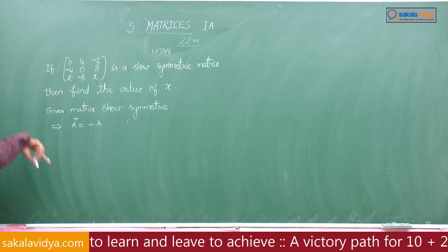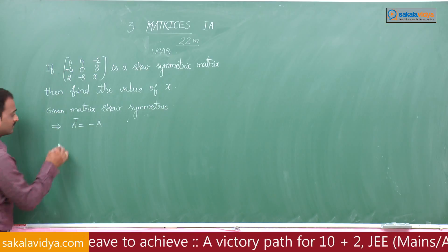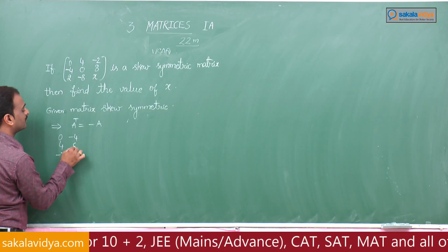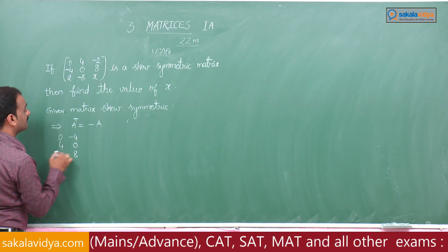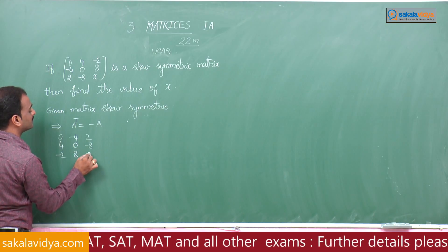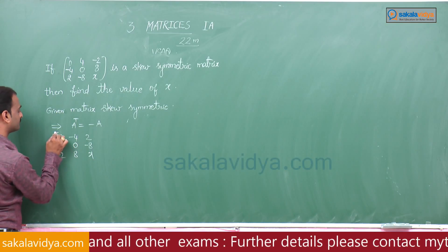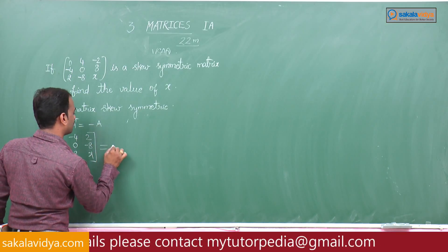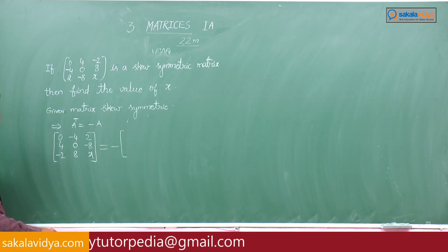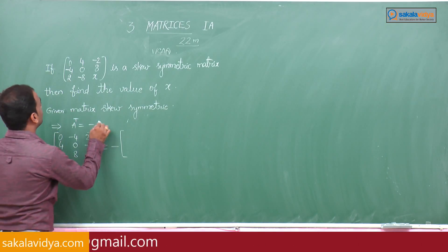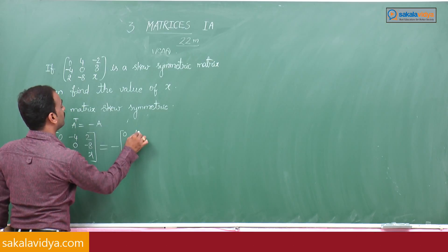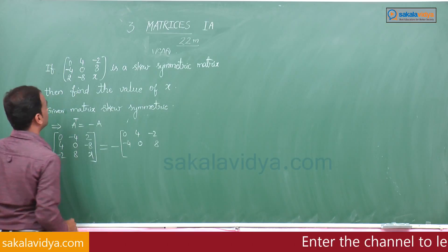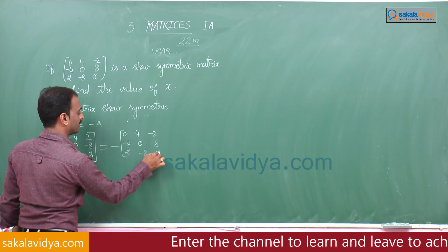The given matrix is A. Its transpose A^T equals 0, 4, minus 2, minus 4, 0, 8, 2, minus 8x, which must equal minus A, where A equals 0, 4, minus 2, minus 4, 0, 8, 2, minus 8x.